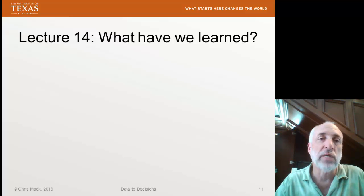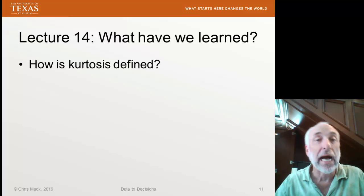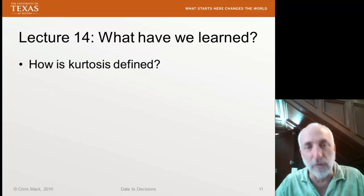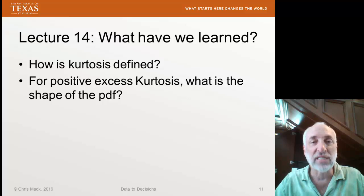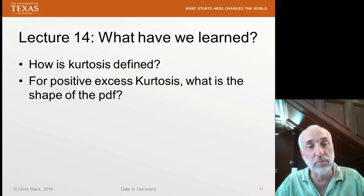So what have we learned in lecture 14? As always, you should be able to quickly and easily answer these questions. If not, you need to review the materials. How is kurtosis defined? I'll remind you again, I'm not expecting anyone to memorize equations here. You need to be able to find the equation when you need it. For positive excess kurtosis, what is the shape of the PDF, the probability distribution function? And similarly, what does that shape look like for negative excess kurtosis?